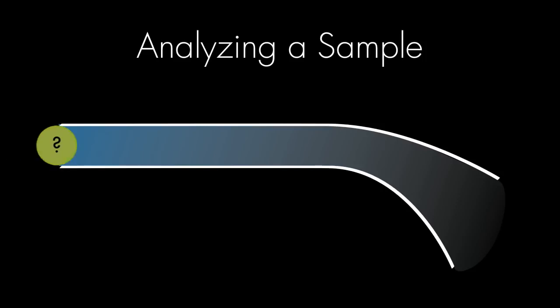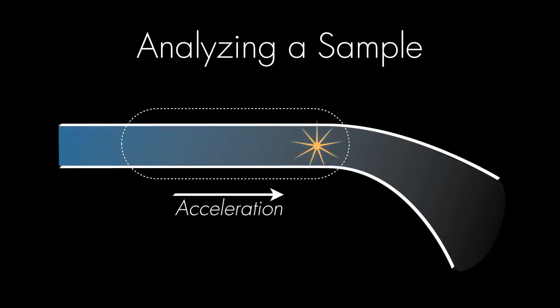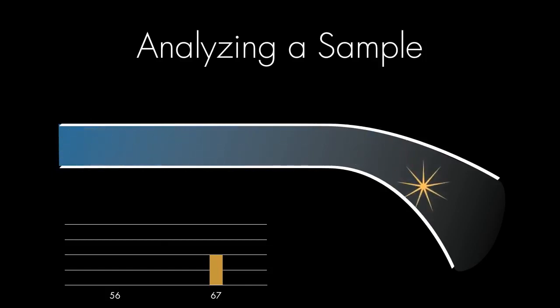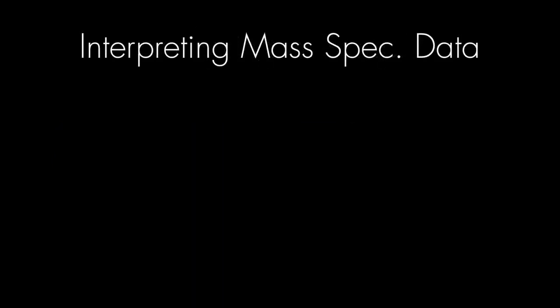So let's analyze a sample. If we vaporize it, ionize it, accelerate it, deflect it, and then detect it, we can record its mass-charge ratio. If we repeat this with more of the same sample, we will record different size fragments. Eventually, we'll know the proportions of all the different size pieces in our original sample. So how do we interpret mass spectrometer data?